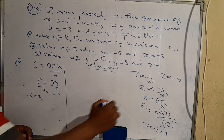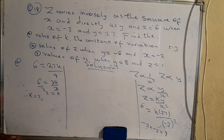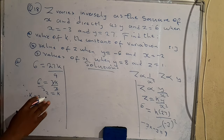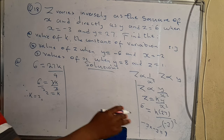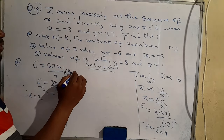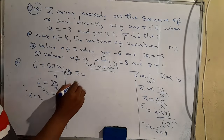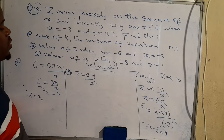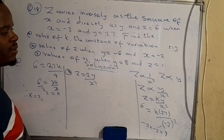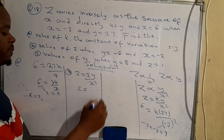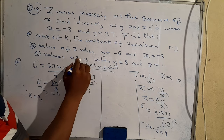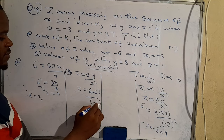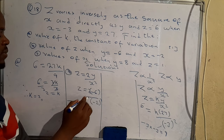Now, what is the value of z when y and x are new values? After determining k, we plug it into the equation: z = 2y/x². We substitute y = negative 6 and x = negative 2, giving z = 2×(−6)/(−2)².